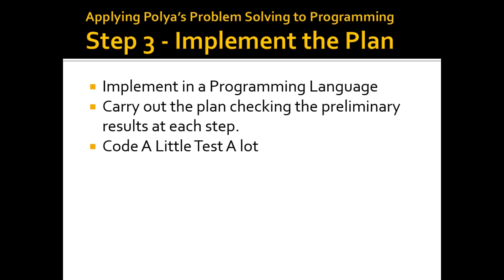Step 3 is to implement: we activate the programming language. To implement, we carry out the plan, checking the preliminary result of each step to guarantee all the steps are related to our problem, and then we code and test.